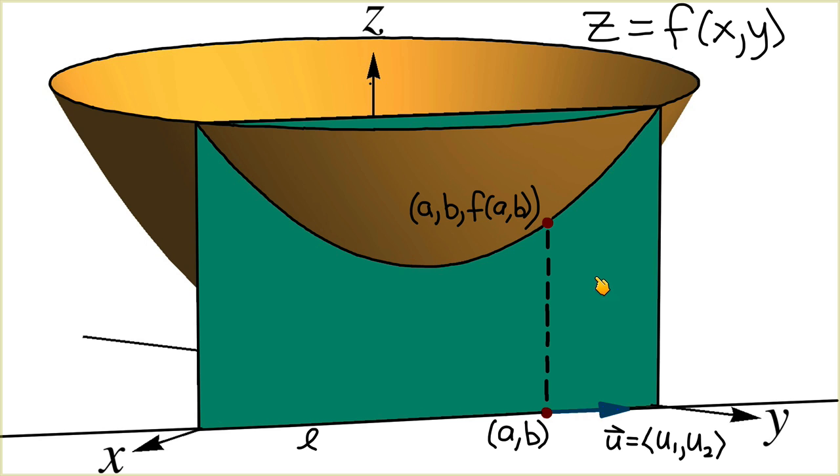Then observe that this plane and the surface intersect in a curve. Finally, we sketch a line in the plane that's tangent to the curve at the point (a,b,f(a,b)).